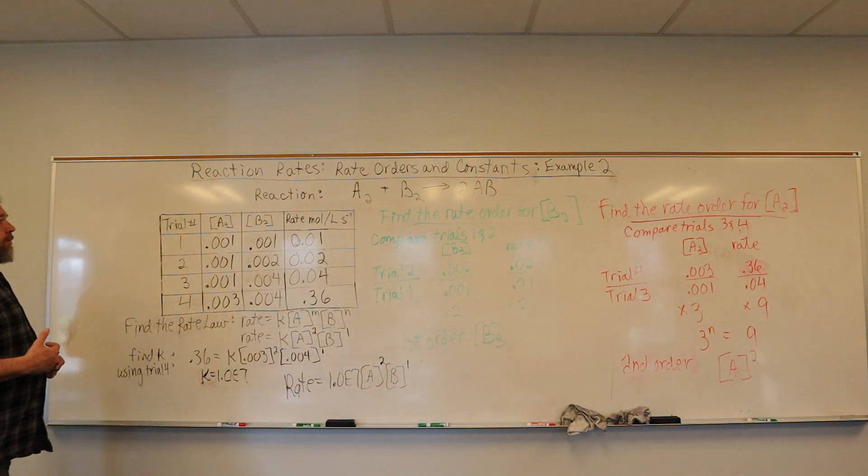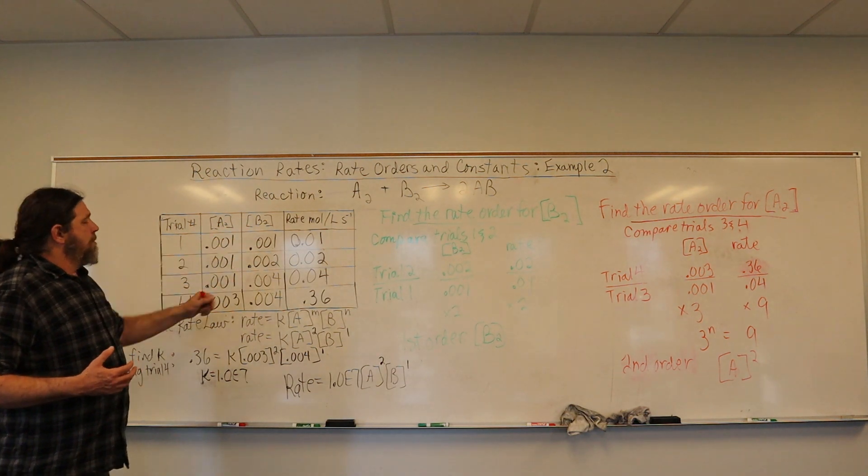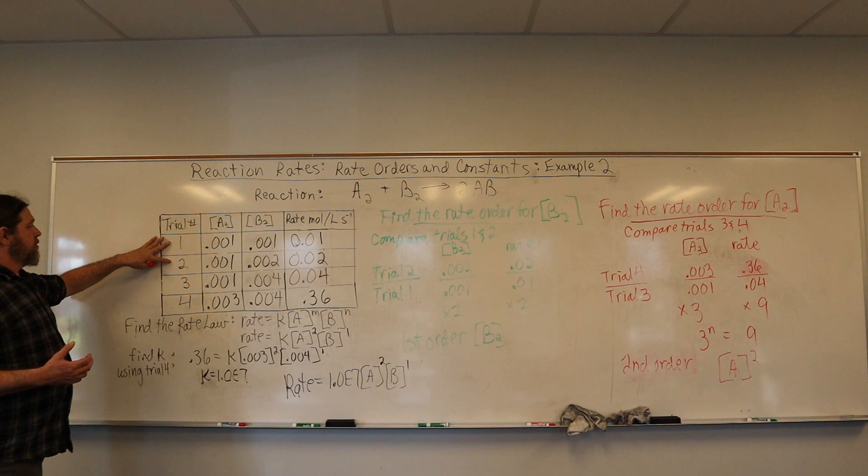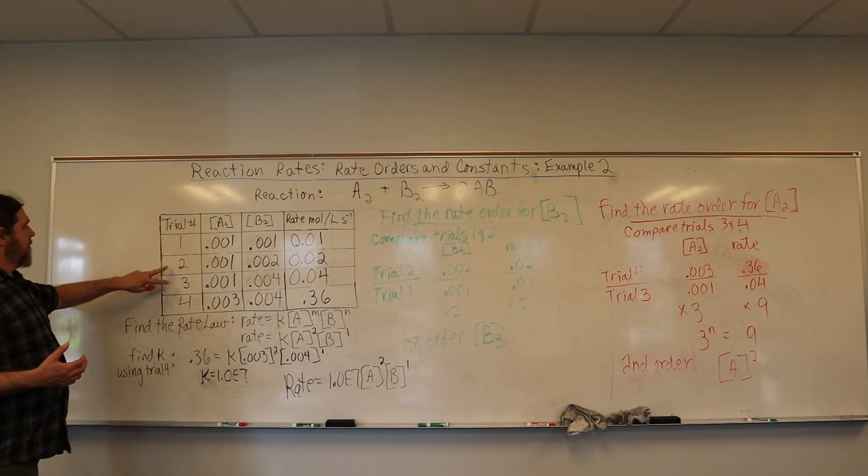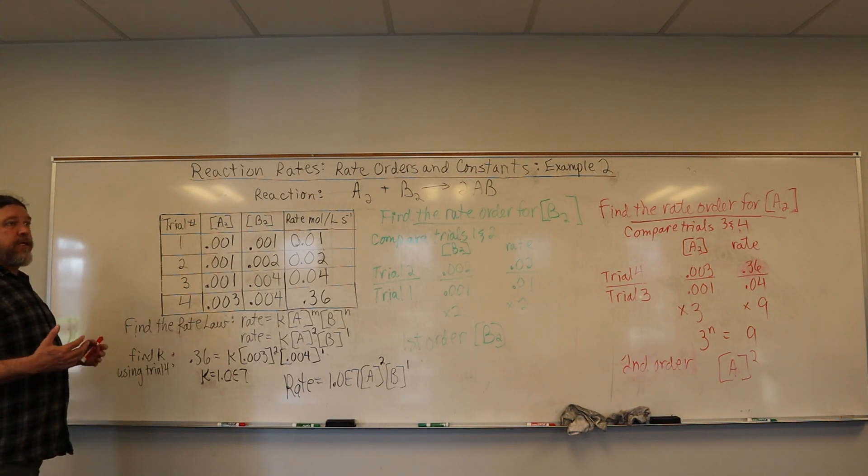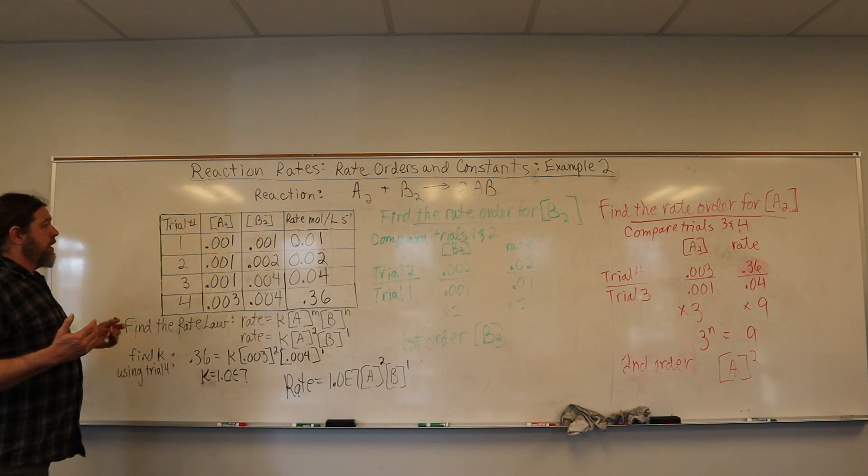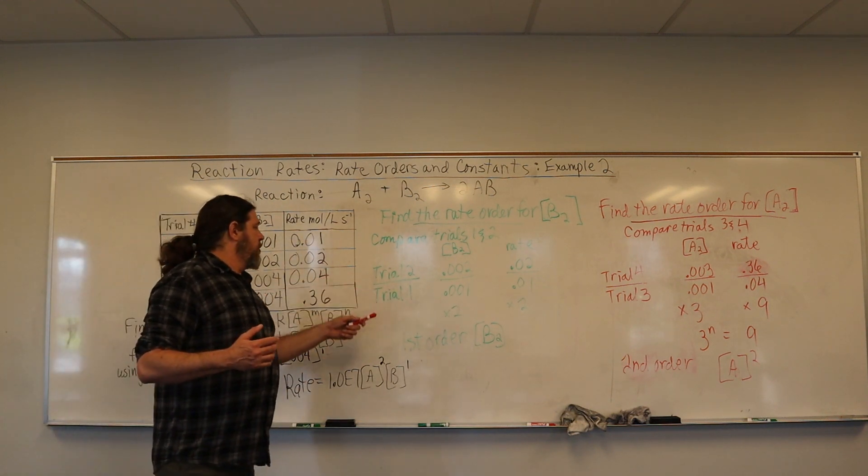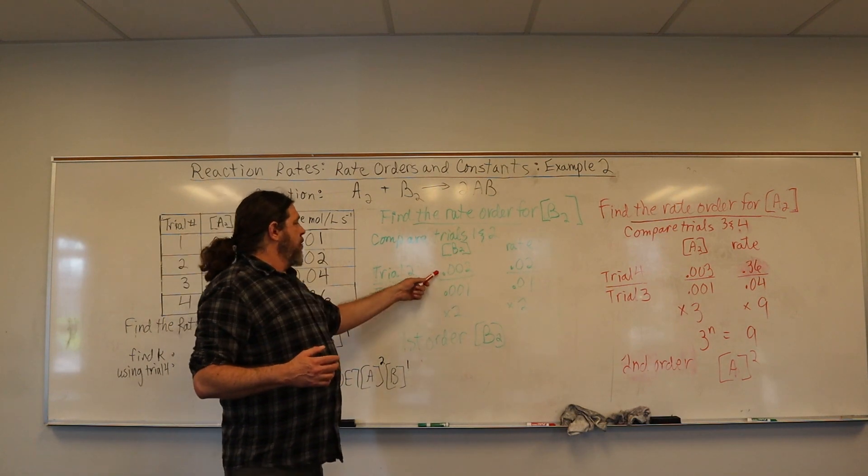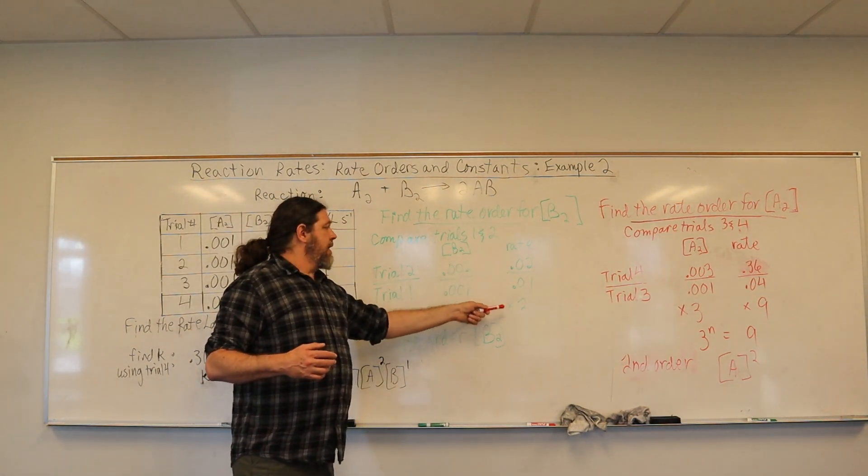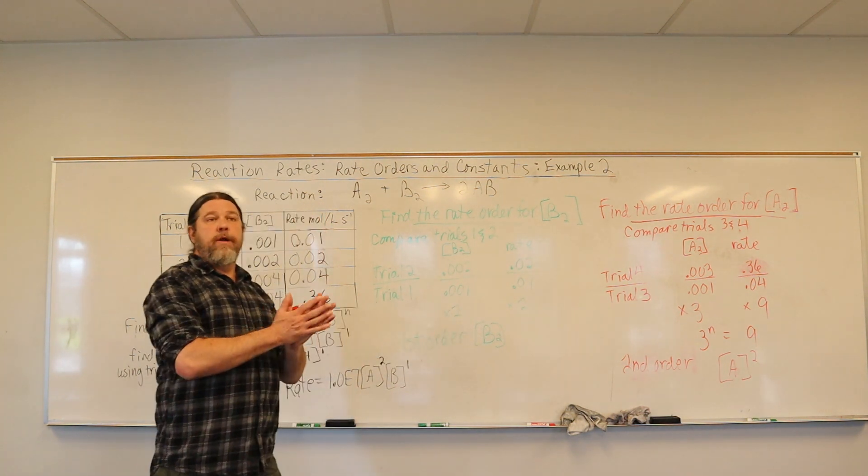Now we move on to the B reactant. And we could either compare trials 1 and 2, or we could compare trials 2 and 3. If this is properly gathered data, either analysis will work. So we will just say 2 over 1, we doubled the reactant concentration, and it doubled the rate. So it's a one-to-one ratio. That's first order.